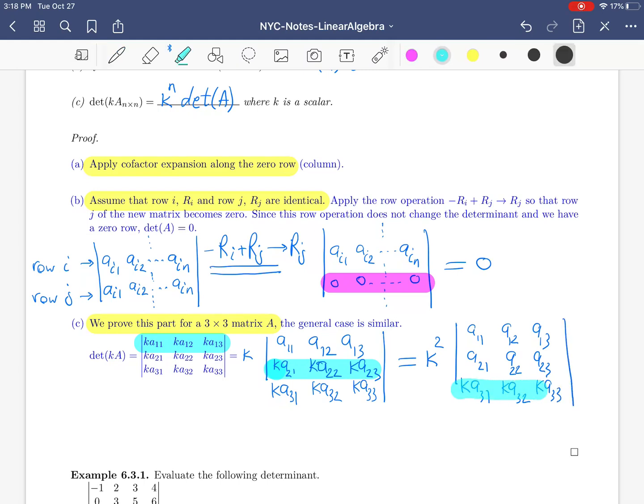And then, we repeat the argument for the third row, we get K cubed. Then, the determinant of just A: A31, A32, A33. That is just K cubed to determinant of A.